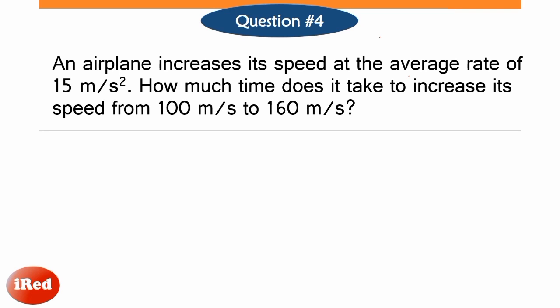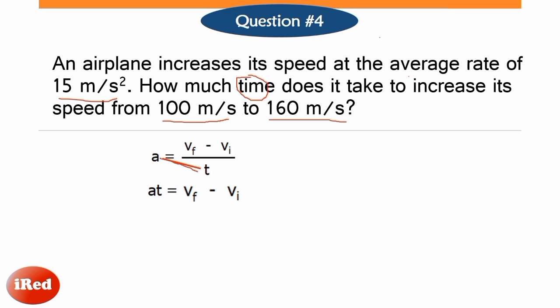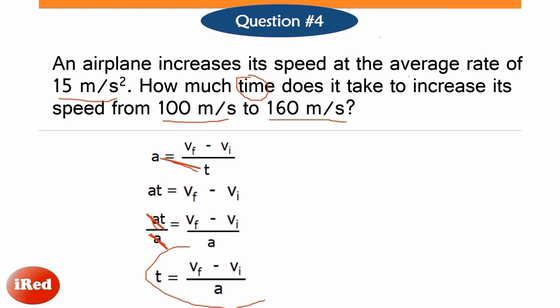The given are: acceleration = 15 m/s², initial speed = 100 m/s, and final speed = 160 m/s. The problem asks for the time it takes to increase speed from 100 to 160 meters per second. The equation for acceleration is: acceleration equals final velocity minus initial velocity, all over time. To compute for time, let's derive the equation. Cross-multiplying: acceleration × time = final velocity − initial velocity. Then divide both sides by acceleration. That gives us: time = (final velocity − initial velocity) / acceleration.